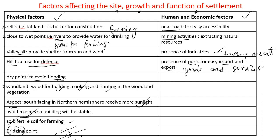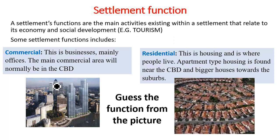Settlement functions are the main activities existing within a settlement that relate to its economy and social development — for example, tourism. The major functions of settlement include the commercial function, which has to do with businesses and mainly offices. The main commercial area will normally be the CBD within the settlement.